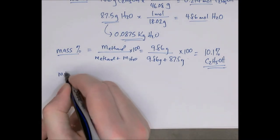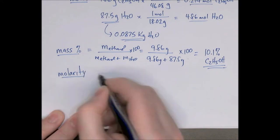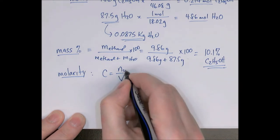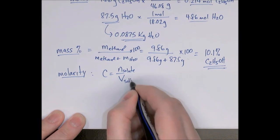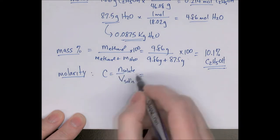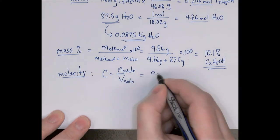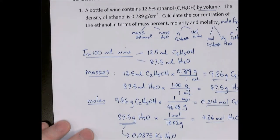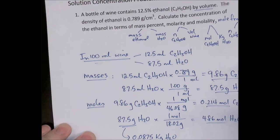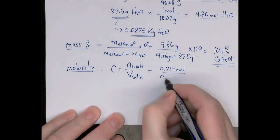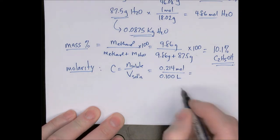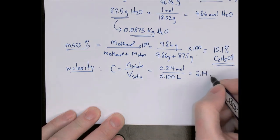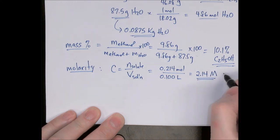For molarity, C = n/V, where n is moles of solute and V is volume of solution in liters. The moles of ethanol were 0.214, and we started with 100 mL of wine, which is 0.100 liters. So molarity = 0.214 ÷ 0.100 = 2.14 moles per liter, or 2.14 M.